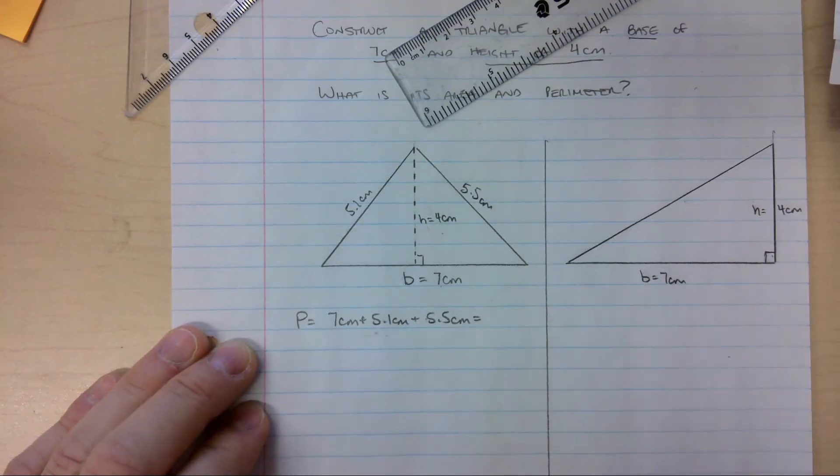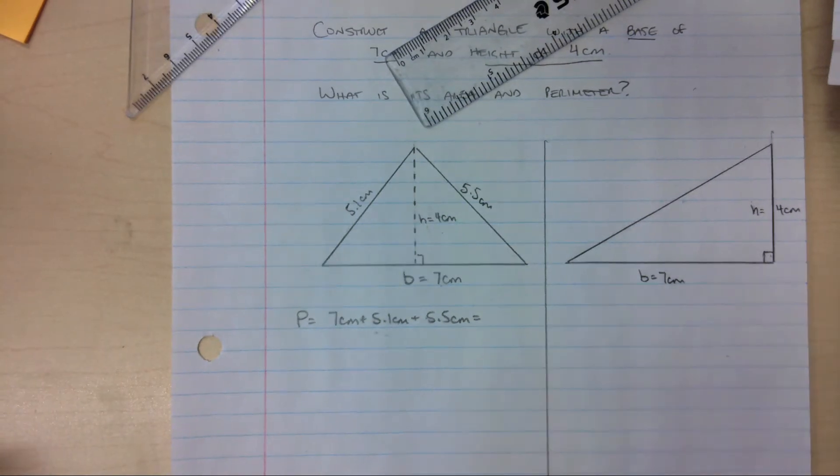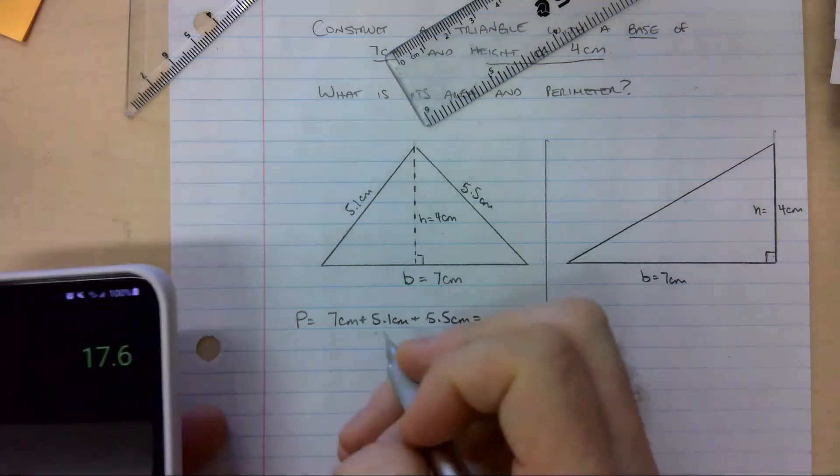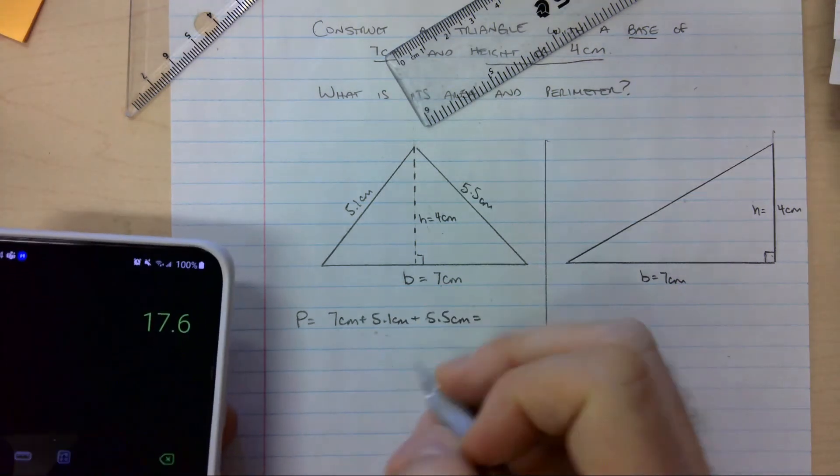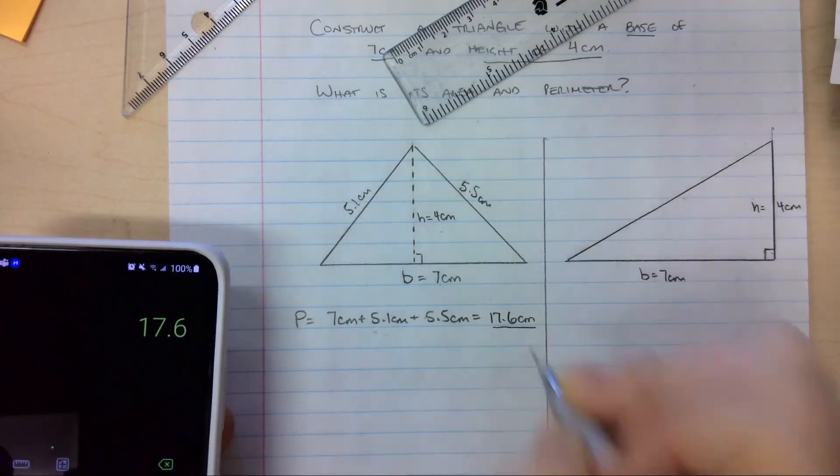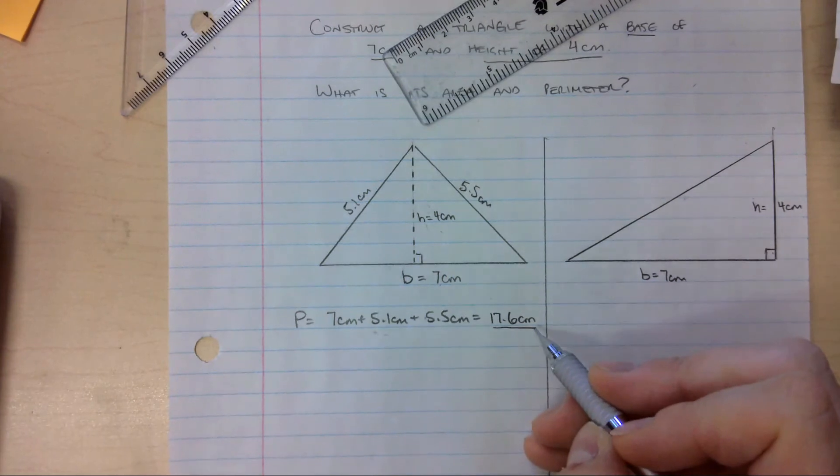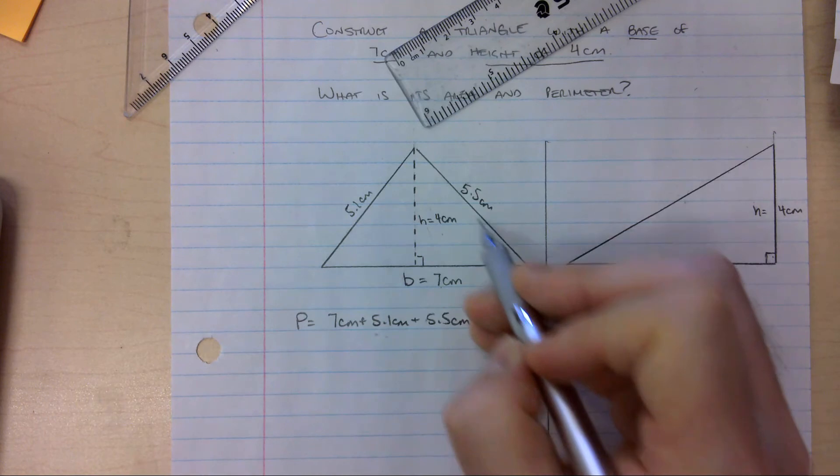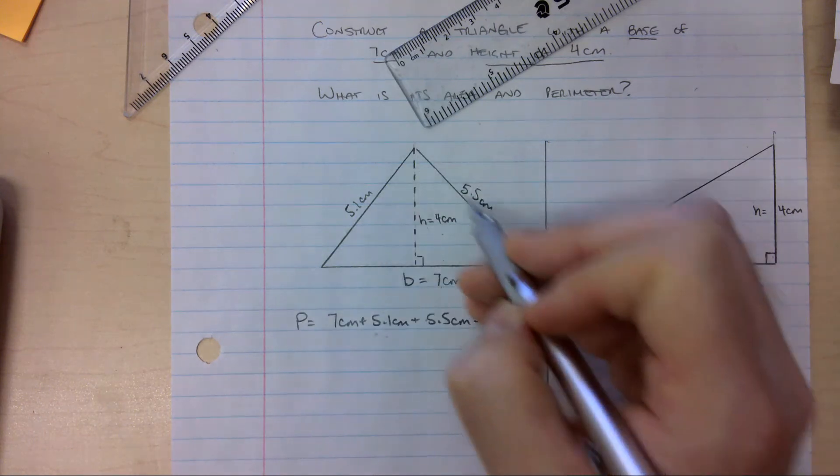And I can use a calculator to do that. If I do that, I will get my answer. And my answer that I get on my calculator is 17.6 centimeters. Notice that it's not 17.6 centimeters squared, because I'm not talking about area, I'm talking about perimeter, which is only measuring length around a shape.